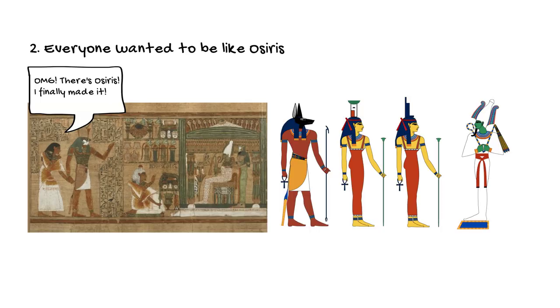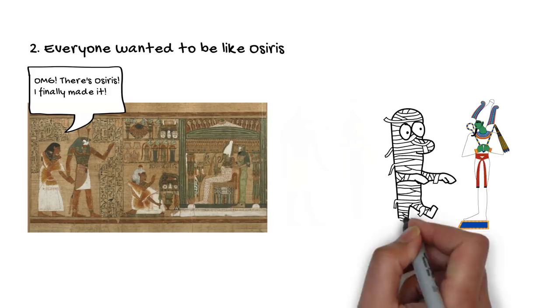So being preserved and wrapped up during mummification basically imitated the same process that Osiris went through, and therefore helped them live on into the afterlife.